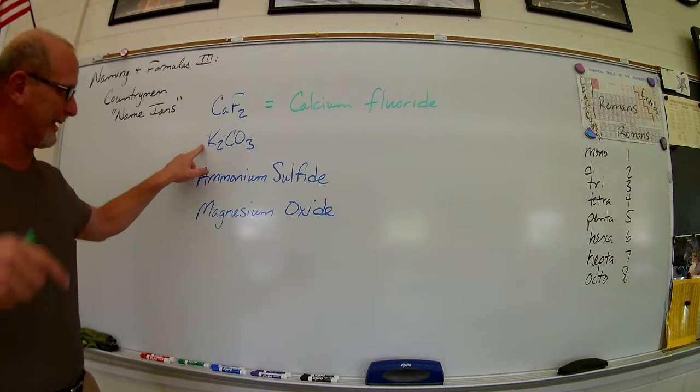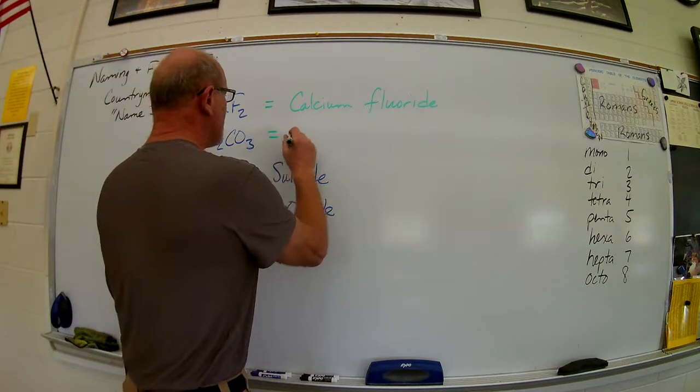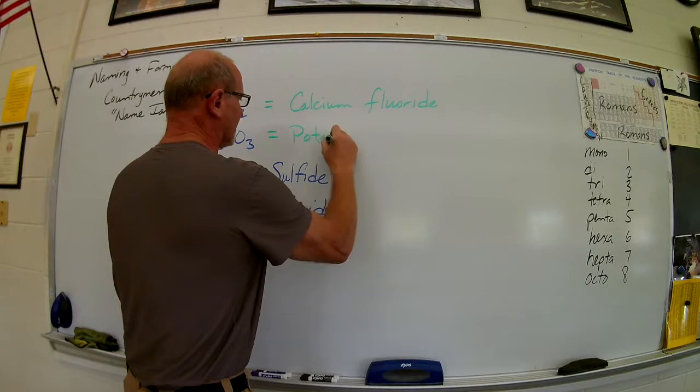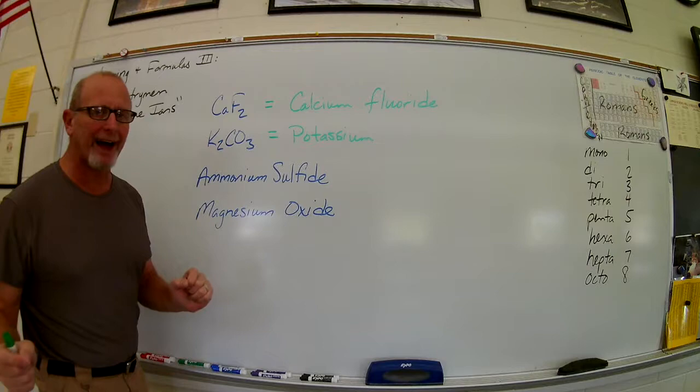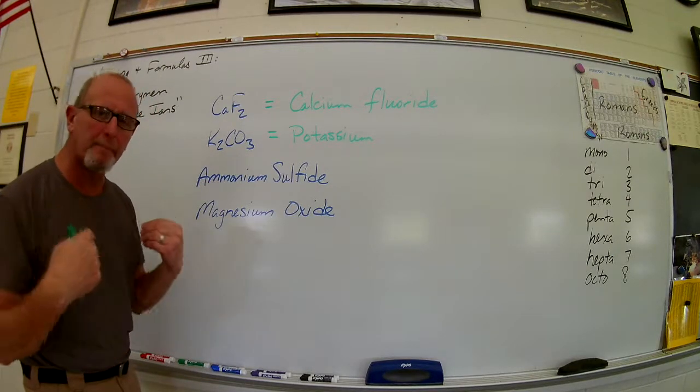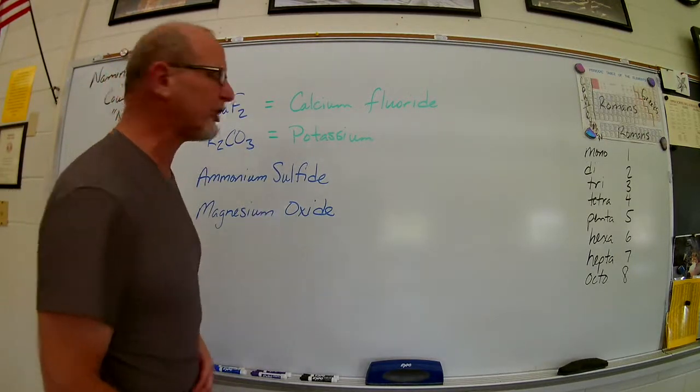What if it's got a polyatomic ion in it? No problem. Potassium's in the first column. It's a countryman. Potassium, CO3 is a polyatomic ion. I've got to remember these. I must memorize them. There's a sheet out there.